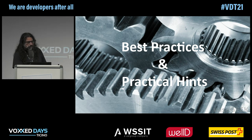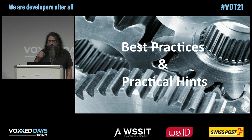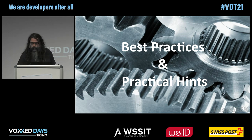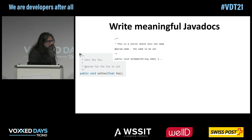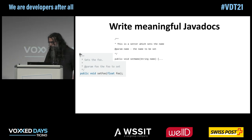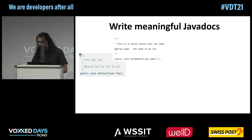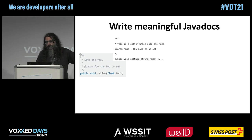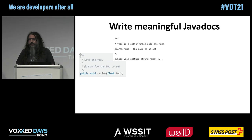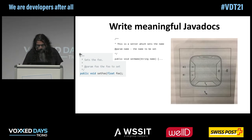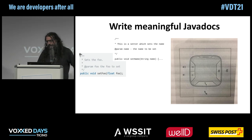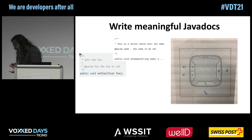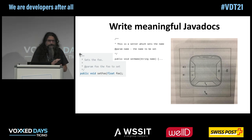I wanted to give some very practical hints with a few examples. One of the first points is documentation. I try to figure out what a method does, but figuring out is not always the best thing — documentation helps a lot. Unfortunately, often documentation is written like 'sets the name' — it sets the name. Which is essentially the same level of information that the method name already provides.